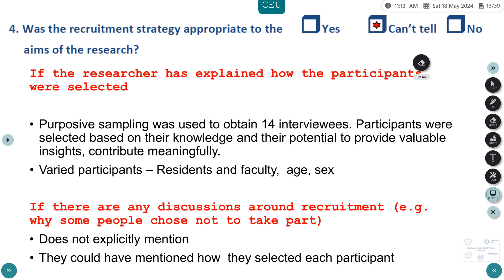Was the recruitment strategy appropriate to the aims of the research? Purposive sampling was used to obtain 14 interviews. Purposive sampling is when samples are selected from the overall pool based on the researcher's judgment. Here, participants were selected because they were emergency physicians likely to provide valuable insights — essentially picking and choosing participants based on their knowledge and potential contribution.